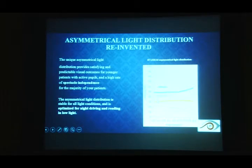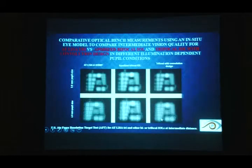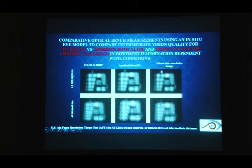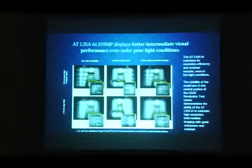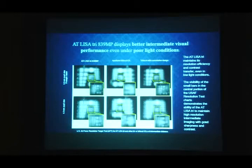Regarding light energy transmittance: the trifocal has a highly efficient optic design with about 85.7% transmittance. With three focal points, the amount of light entering through the lens is compromised but not significantly. The graph shows that light intensity for different distances remains quite flat across pupil sizes — pupil size does not significantly matter. On an optical bench comparing the AT LISA Tri with an apodised bifocal and a conventional design, the AT LISA Tri shows much better intermediate vision quality at both 3 mm and 4.5 mm pupil sizes.